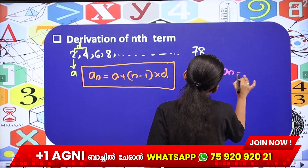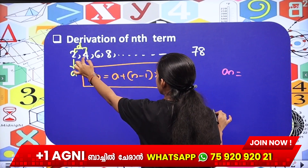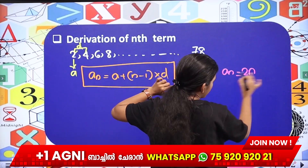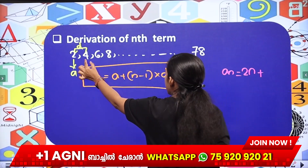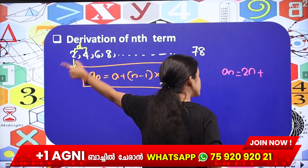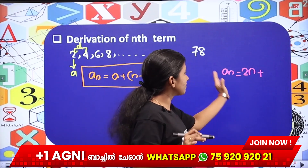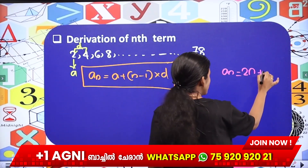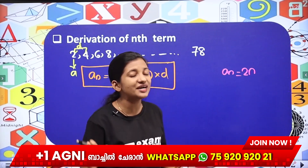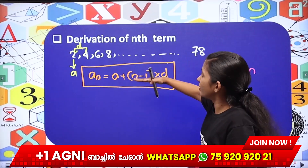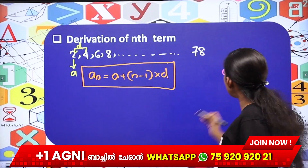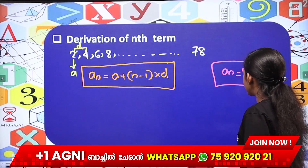Then an equal to — the common difference is 4 minus 2, equal to 2. Then n is equal to 2. If you want to get the first term, then we have the algebraic expression 2n. If you want to change the question to a plus n minus 1 into d, then we will check all the algebraic expression.